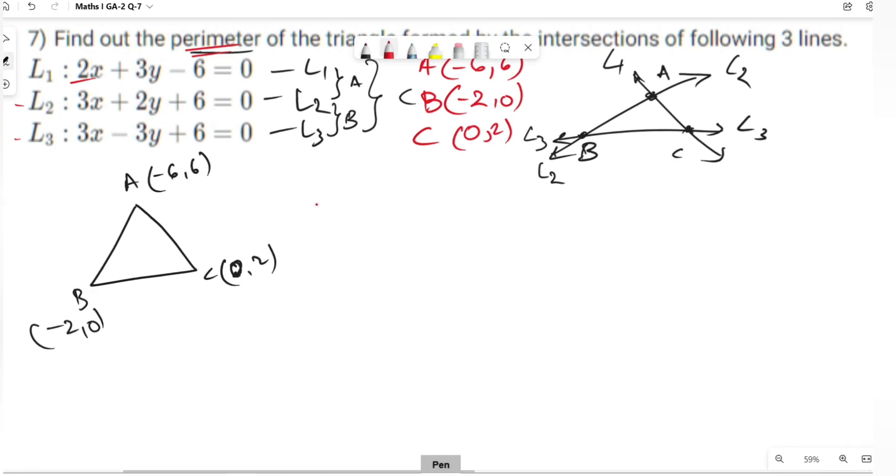The length of AB is: (minus 6 plus 2) whole square is 16, plus (6 minus 0) whole square is 36, which equals under root 52.